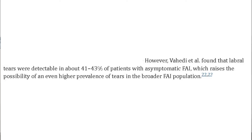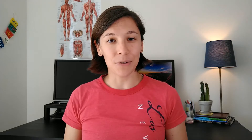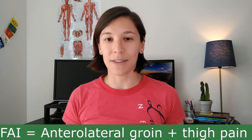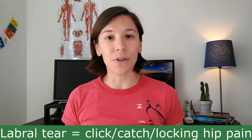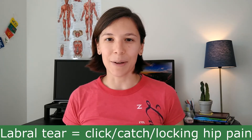One problem that still persists in studies with FAI combined labral tears is that they're finding that 41 to 43 percent of the population may be asymptomatic. This suggests there may actually be a higher prevalence of these structural deformities, but it's not always equating to symptoms being experienced. Symptoms you could experience for an FAI could be a sharp or aching pain anterior-lateral to the groin, radiating down to the thigh. Other symptoms could include a clicking, locking, or catching of the hip.